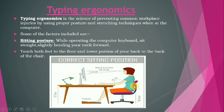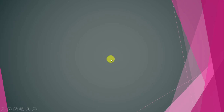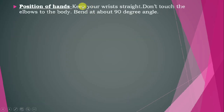There should be a gap of at least 40 to 75 centimeters while working on the computer. The chair and table position should be very comfortable for you. Regarding the position of the hand, when working on the computer your wrist should be straight, do not touch the elbows to the body, and bend at about 90 degrees.